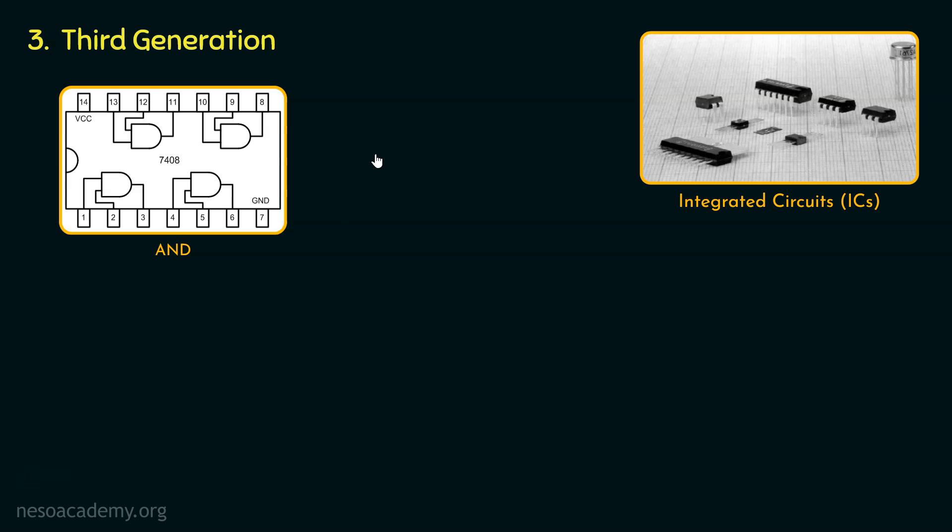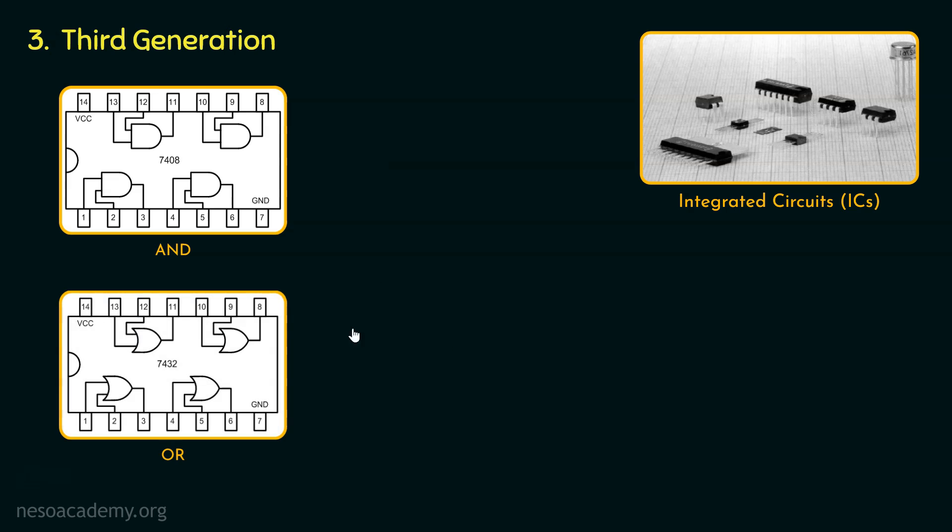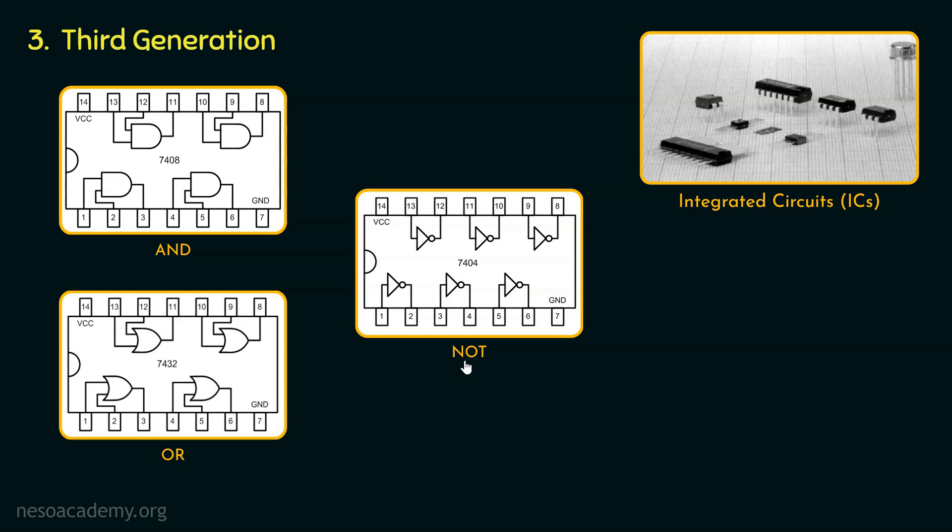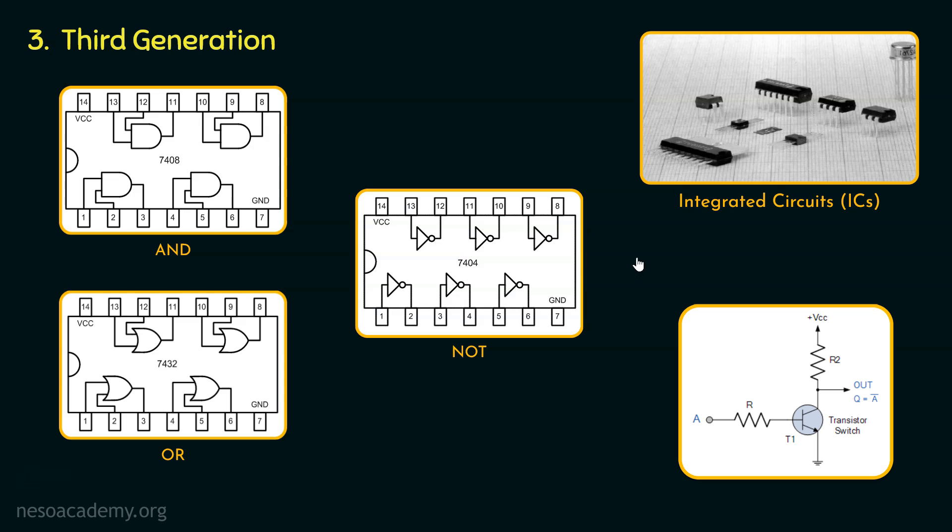Integrations like this are known as small-scale integration. And the same can be noted for OR and NOT ICs. Observe, in case of NOT integrated circuit, which is numbered as 7404, we have got six NOT gates. And if you remember the transistor implementation of NOT gate from our previous session, in case of NOT gate implementation, we use only a single transistor. Therefore, in this particular integrated circuit, we at least have six transistors implementing all these NOT gates.